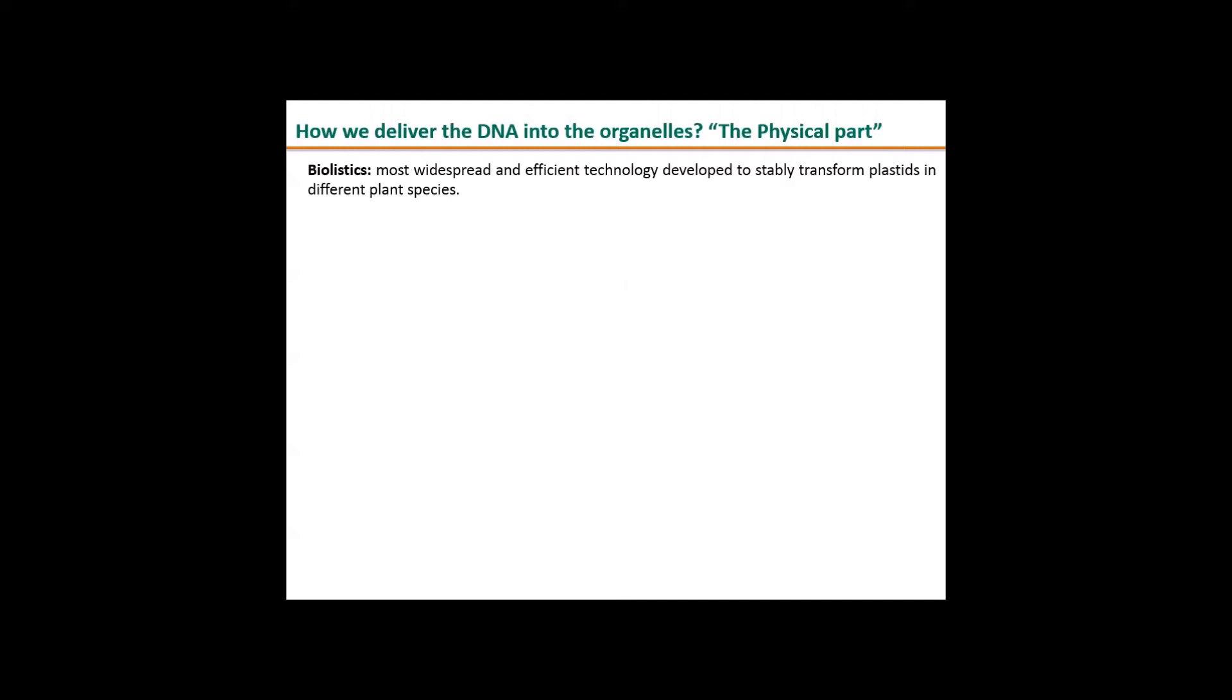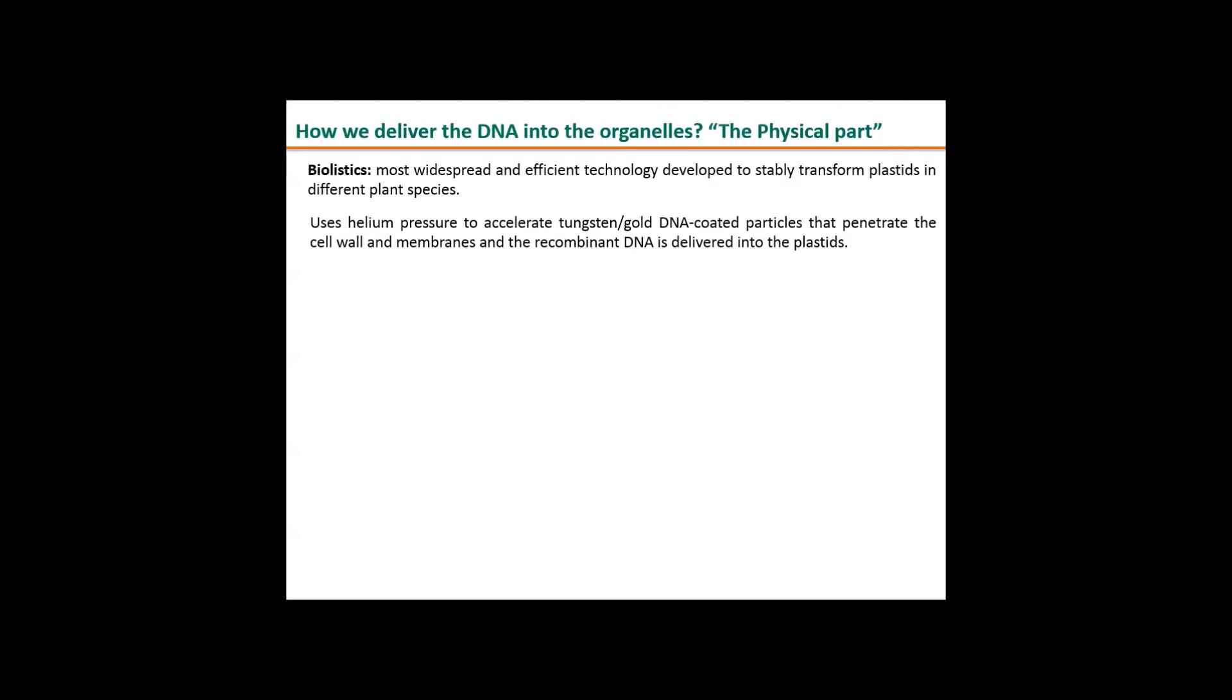Biolistics is the most widespread and effective, efficient technology to stably transform plastids in different plant species. There are other techniques, and this is just part of the process, which is divided in two steps. The part I'm talking about is the first step or the physical part where we deliver the DNA into the organelles. We use helium pressure to accelerate tungsten and gold particles coated with DNA. They penetrate into the cell wall and membranes and the recombinant DNA is delivered into the plastid. On the right you can see the device we use: a Biolistics PDS-1000 helium instrument, which we also call a gene gun.